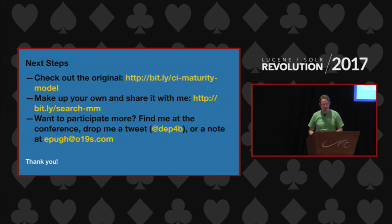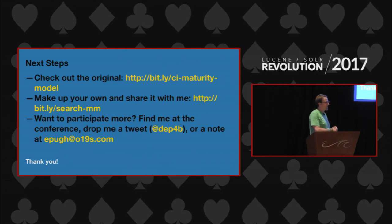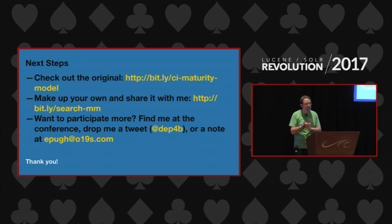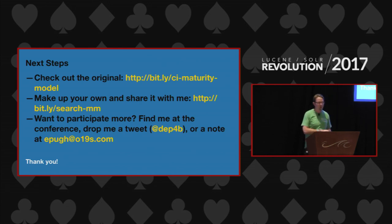Next steps. I have those two links out there and will post them on Twitter at Lucene Revolution so you can find them. The first is the CI maturity model — a really valuable approach I wish I'd seen more in our search world. Second, there's a Google spreadsheet where I put what you saw, but I'd really love to hear from other folks what they think is basic, beginner, intermediate, advanced. There's a tab where you can put your name and email address — love to have a conversation about it. I'm here, would love to talk more. That's my Twitter handle and email address. Thank you.